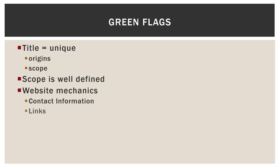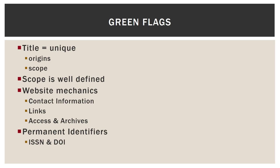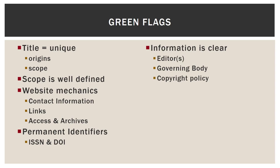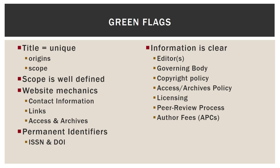Contact information should be clear and all links should be working. There should be a section on accessing the article and journal, and how they archive. Permanent identifiers should be used correctly — ISSN for the journal itself and DOI for the individual articles. You want clarity: as much of the information as possible should be clear, including editor and editorial information, governing body, copyright policy, access and archives policy, licensing, the peer review process, and any author fees or article processing charges. If there are other revenue sources or advertising, that should also be listed somewhere.